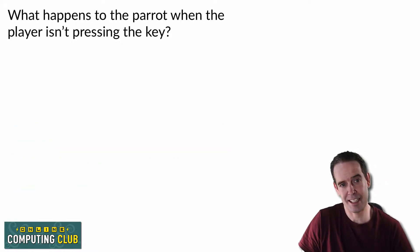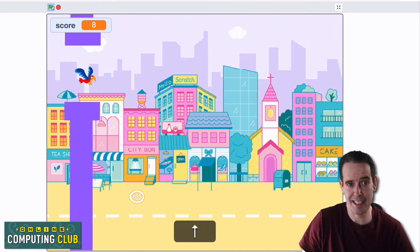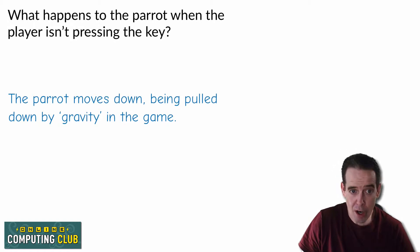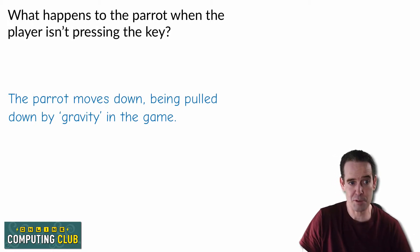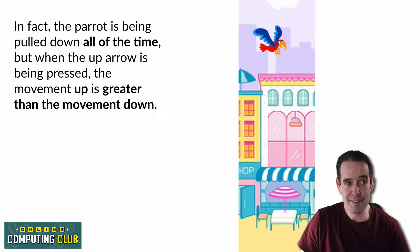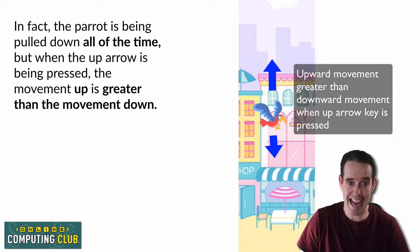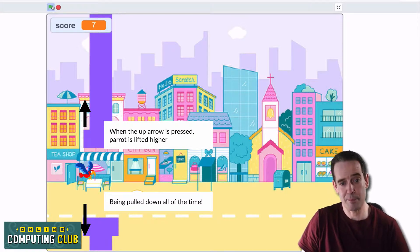What happens to the parrot when the player isn't pressing the key? The basic idea is that the parrot is being pulled down towards the ground — it's as if there's gravity in the game. Scratch doesn't understand gravity, so we're going to have to create algorithms for modeling our own version of gravity. Throughout the game the parrot is being pulled down all of the time. Even when the up arrow is being pressed, that algorithm is trying to pull the parrot down. It's just that when we press the up arrow, the upward movement is greater than the downward movement coming from our version of gravity. So when the up arrow is pressed the parrot is lifted higher, but it's still being pulled down all of the time.